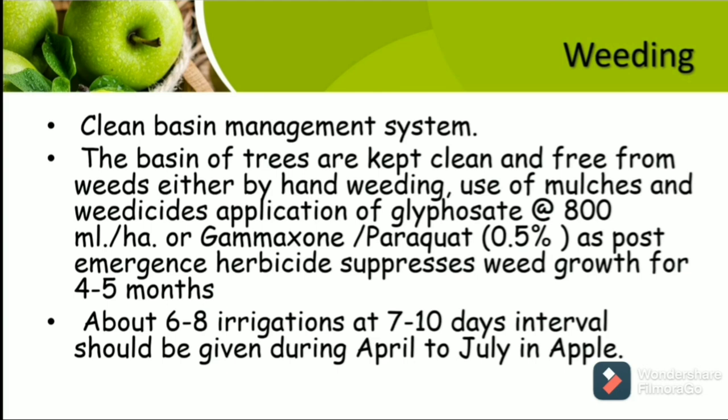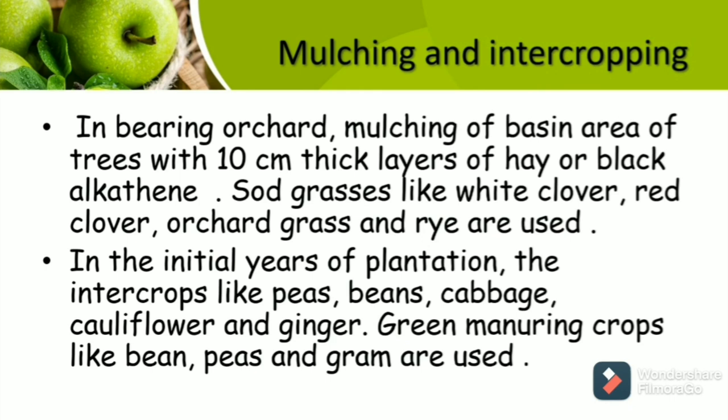Regarding mulching and intercropping: In bearing orchards, mulching of the basin area of trees with 10 cm thick layers of hay or black polythene is used. Short grasses like white clover, red clover, orchard grasses, and rye are used. In the initial years of plantation, intercrops like peas, beans, cabbage, cauliflower, and ginger are used. Green manuring crops like bean, peas, and gram are recommended.